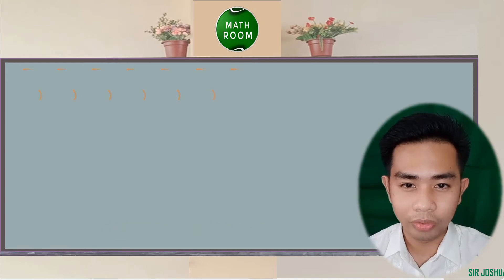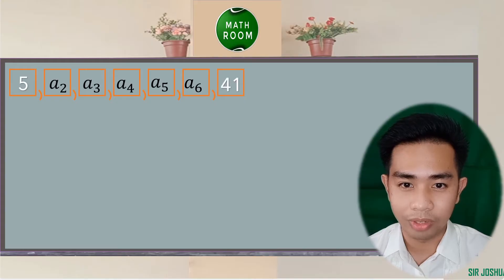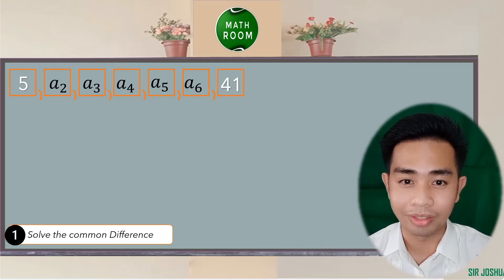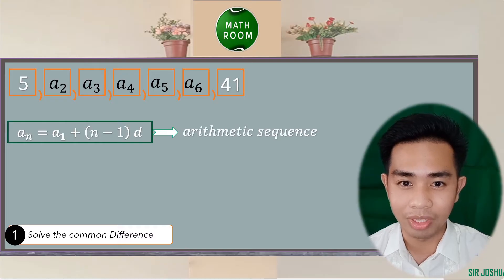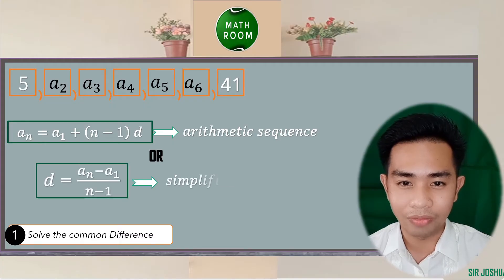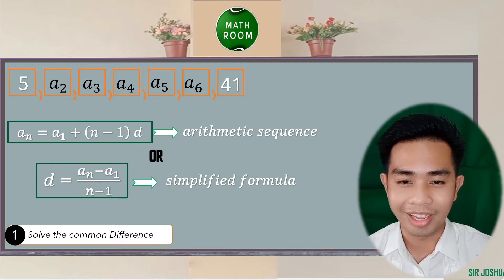In order to find the arithmetic means, we need to first find the common difference. There are two ways to get the common difference. First, using the arithmetic sequence formula: a sub n equals a sub 1 plus quantity n minus 1 times d. Or we can use the simplified formula: d equals a sub n minus a sub 1, all over n minus 1.